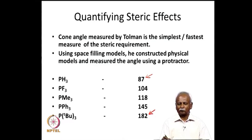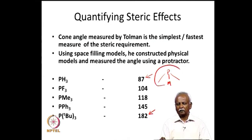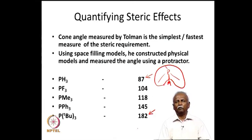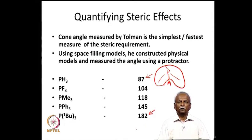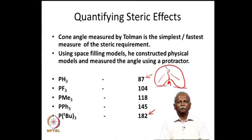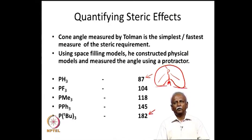What does a cone angle of 182° mean? It means that on one side of the metal, the phosphorus atom completely blocks that side. Even though the phosphine has three R groups pointing away from the metal, the projected area on a flat surface would indicate a cone angle of 182° — meaning more than a hemisphere around the metal is occupied by this single ligand.